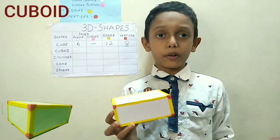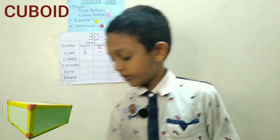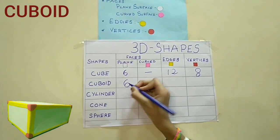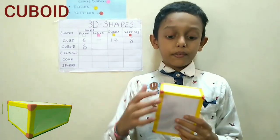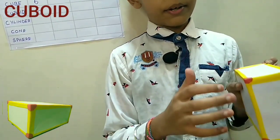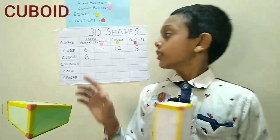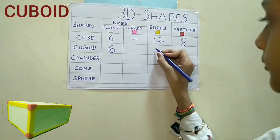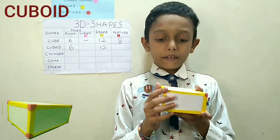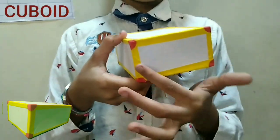Now we will see the cuboid. So let's count the faces of the cuboid. 1, 2, 3, 4, 5 and 6. So there are 6 faces in the cuboid. So we will write here 6. Now let's count the edges of the cuboid. 1, 2, 3, 4, 5, 6, 7, 8.